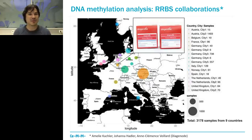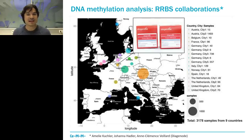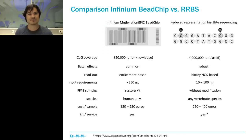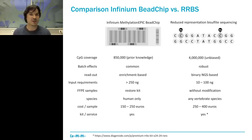At a certain point we realized we couldn't keep up with demand — people were requesting projects faster than we could take them on. This is when we decided to team up with Diagenote. I want to thank Anki Moss, who helped us develop the protocol into a real product now available as a kit on the Diagenote website. In 2016, RRBS has really been catching up with microarray-based methods like the Infinium assay.